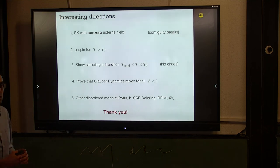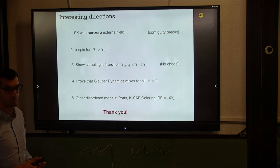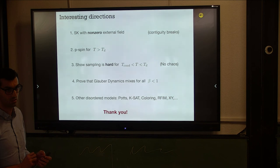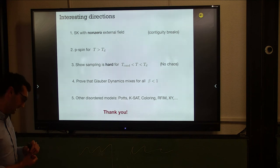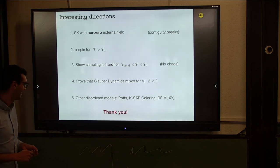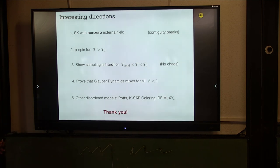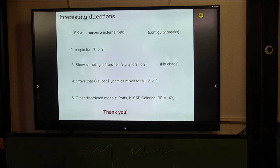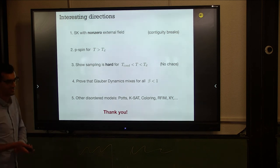Could you use AMP to initialize well and then run Glauber dynamics, using convexity to show Glauber is fast from there? That's a great question. The question is whether this algorithm gives a very good warm start to Glauber and then Glauber works. I thought about it but couldn't come up with a reasonable proof. I would love to show that.